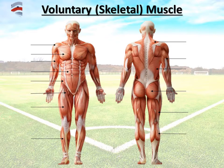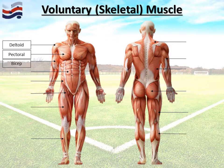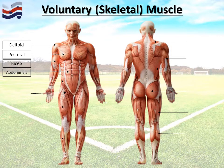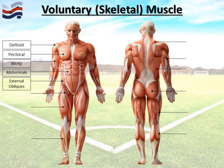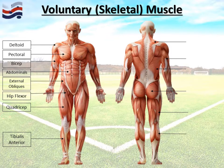Let's see how well you did. Starting in the top left-hand corner, the muscle on the outside of the shoulder is the deltoid. Two large muscles across the chest are the pectorals. Front of the upper arm is the bicep. In the stomach area, we have the abdominals. Just underneath the ribcage and on the side of the abdominals, we have the external obliques. Towards the top of the leg, we have the hip flexor. Front of the upper leg is the quadricep. And front of the lower leg is the tibialis anterior.